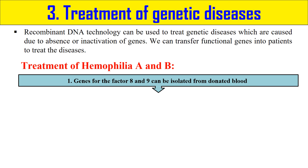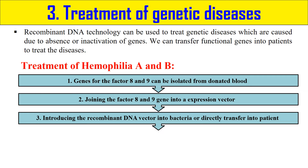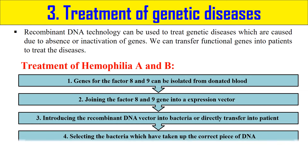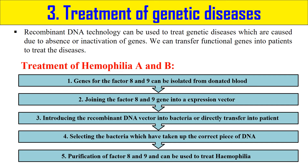For treatment, we isolate the genes for factors 8 and 9 from a source such as donated blood. These genes are joined with an expression vector because we need to express them to produce factors 8 and 9. This recombinant DNA molecule is then transferred into bacteria to multiply. After selection of the bacteria containing the correct recombinant DNA, the bacteria are grown and factors 8 and 9 are purified from the bacterial cells. This purified product can then be used to treat hemophilia — this is an example of gene therapy.